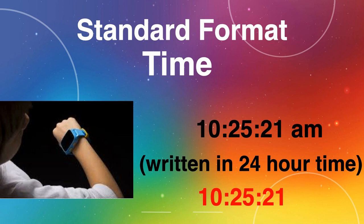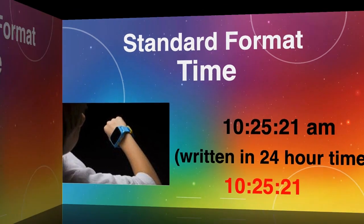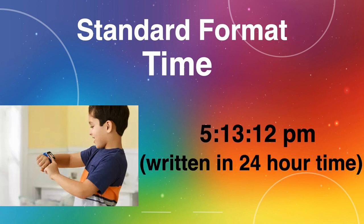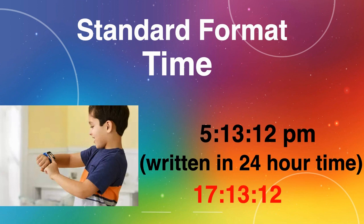Let's look at another example now. What is this time written in standard format? 5:13 and 12 seconds PM. That means we have to go past 12 and count on until we get to the hour of 5. Remember, we are writing this in the 24-hour clock time, so that means 5 o'clock is actually 17, and the minutes and seconds remain the same.